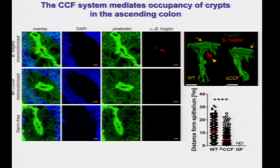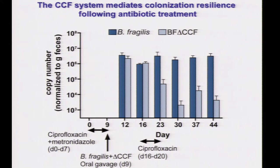Using two-photon microscopy, the dark area is the void space of a crypt. Only wild-type bacteria can penetrate into this crypt; the mutant is at the epithelial surface but never really gets into the crypt. We can quantify hundreds of different crypts, looking at the distance from the epithelium: wild type penetrates further into these crypts than the mutant. We conclude that this particular clade of polysaccharide utilization — the CCF genes — is required for colonization of these crypts.